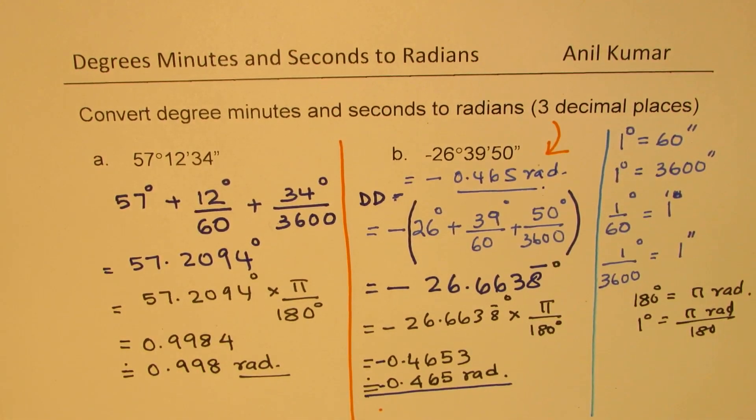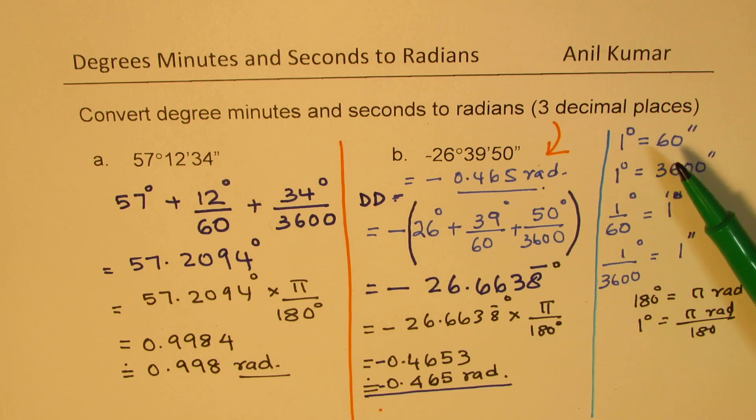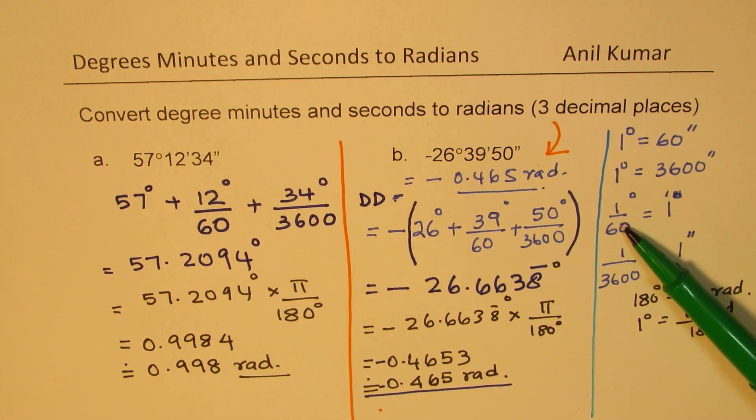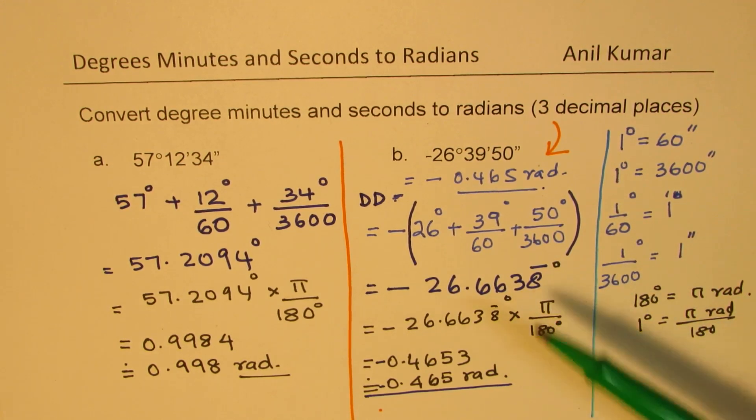So conversion to radians from degrees, minutes and seconds, it is important to first convert that into decimal equivalent of degrees by dividing minutes by 60 and seconds by 3600. Add them all, get your decimal equivalent.